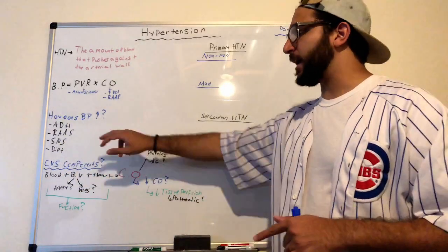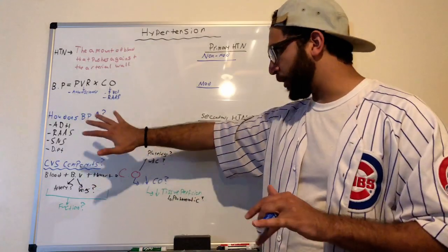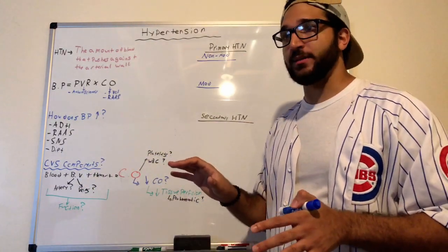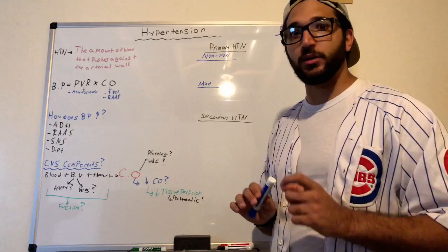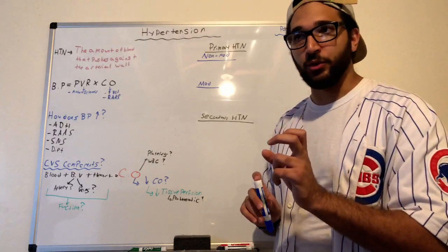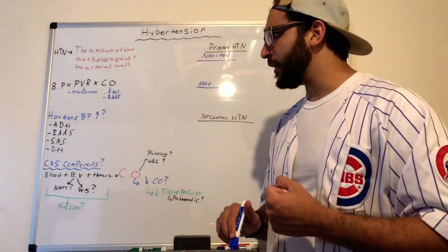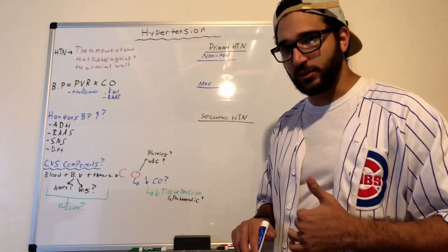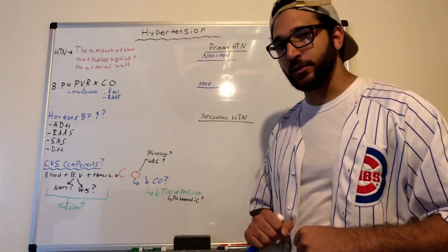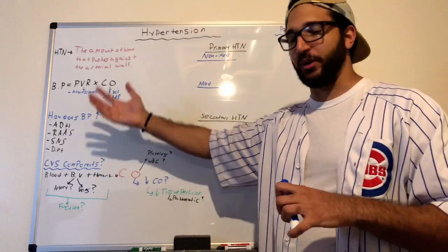The third is RAAS — I'll have a separate video on that, but briefly: aldosterone is released, which retains sodium and water. You also have angiotensin II, which is a potent vasoconstrictor that clamps down on all your vessels, therefore increasing blood pressure. Those are some of the main ways blood pressure increases.